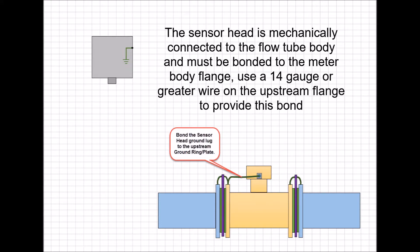The sensor head is mechanically connected to the flow tube body and must be bonded to the meter body flange. Use a 14 gauge or greater wire on the upstream flange to provide this bond.